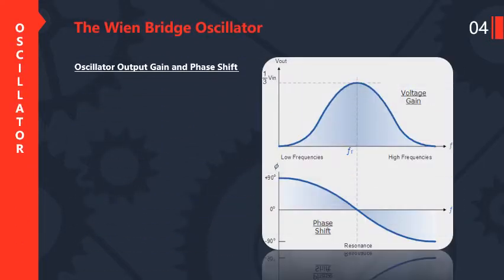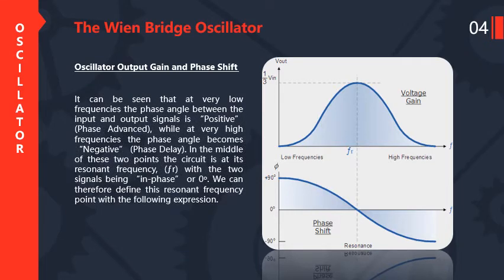This is the oscillator output gain and phase shift diagram. The first is called the output gain and the second is called the phase shift diagram. It can be seen that at very low frequencies the phase angle between input and output signal is positive, meaning phase advanced, while at high frequencies the phase angle becomes negative, called phase delay. In the middle of these two points the circuit is at its resonance frequency FR, with the two signals being in phase or zero degrees. We can therefore define the resonant frequency point with the following expression.